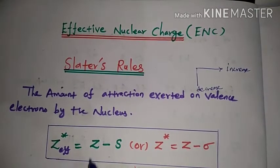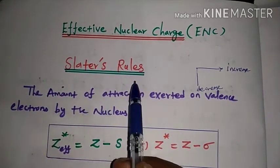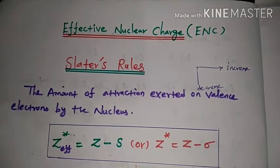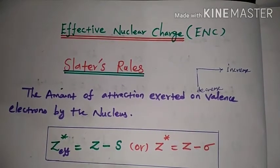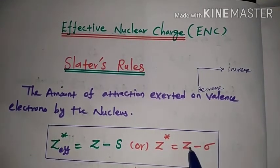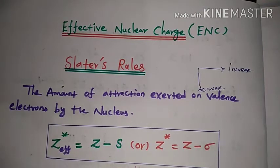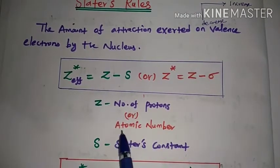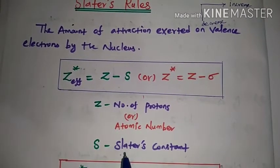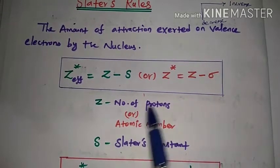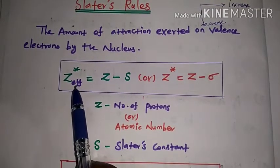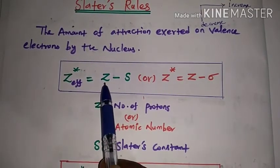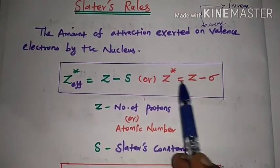To calculate effective nuclear charge, we use Slater's Rule. The formula is: Z effective equals Z minus S, or Z star equals Z minus sigma. This is a very important formula, please keep it in mind.